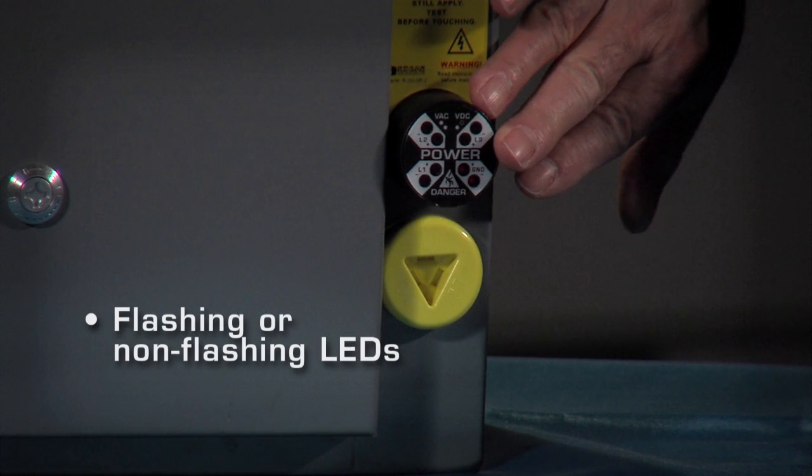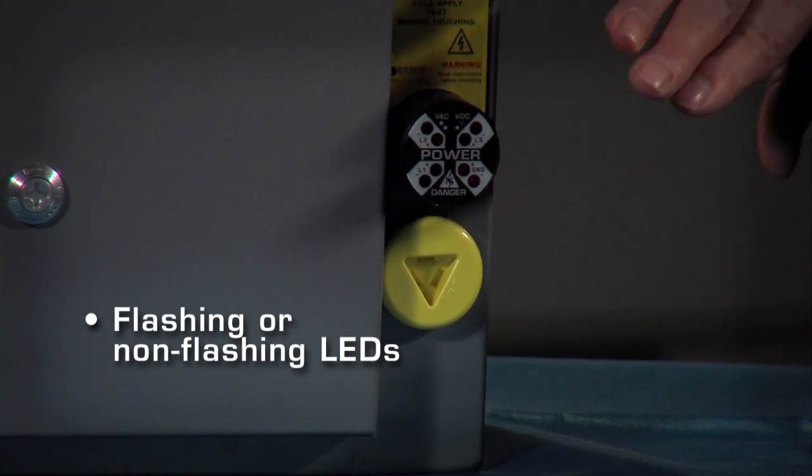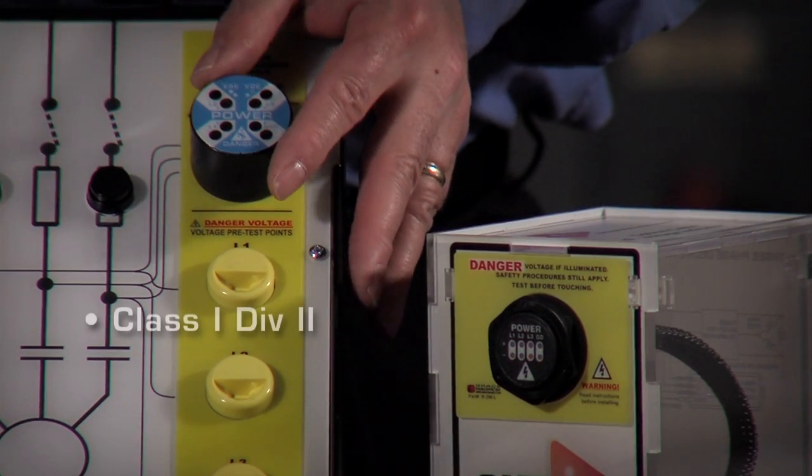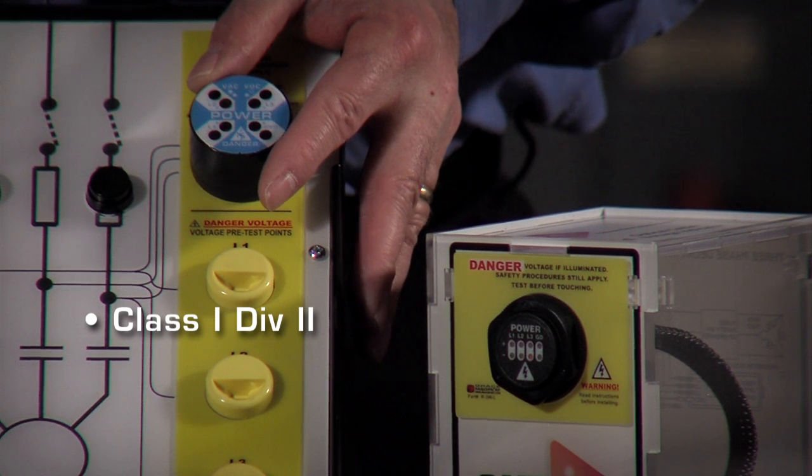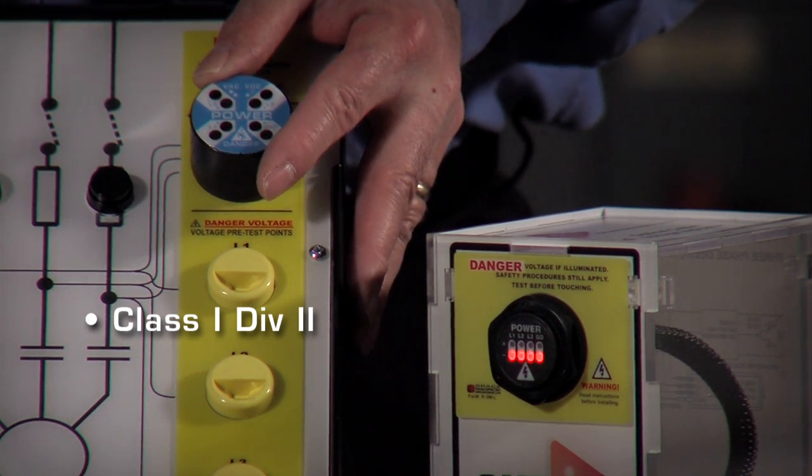Some of those features are a flashing version or a non-flashing version. And here's another version, the Class 1 Div 2, which allows for usage in that type of environment.